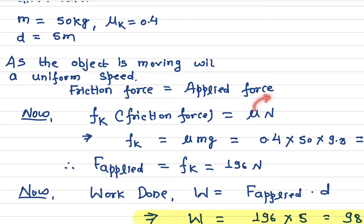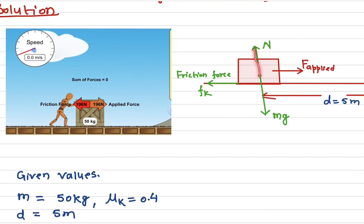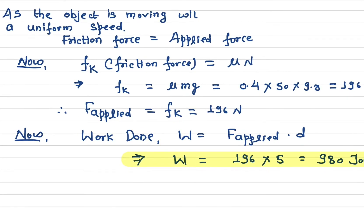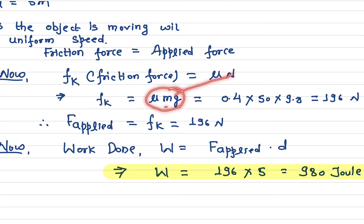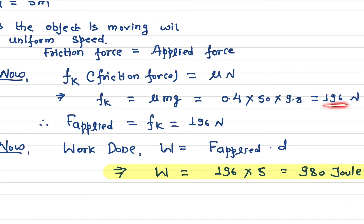The formula for kinetic friction force is Fk = μN, where μ (mu) is the coefficient of kinetic friction and N is the normal force. Since the object is not moving vertically, the normal force equals mg. So N = m × g, which gives us Fk = μk × m × g = 0.4 × 50 × 9.8 = 196 newtons. Since the object moves at constant speed, the applied force also equals 196 newtons.